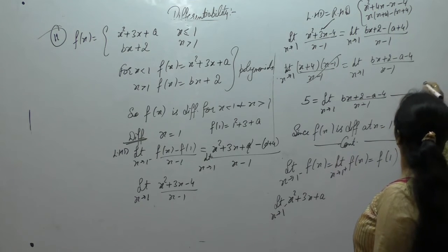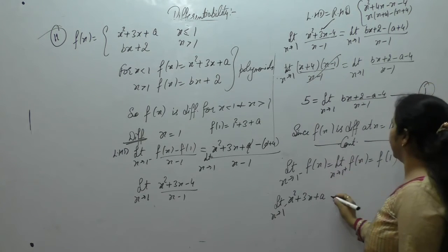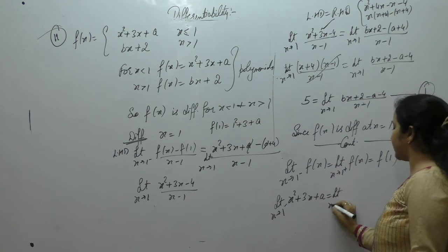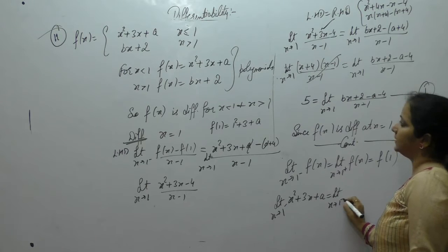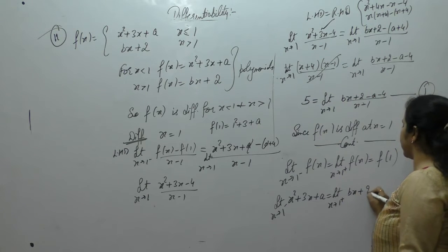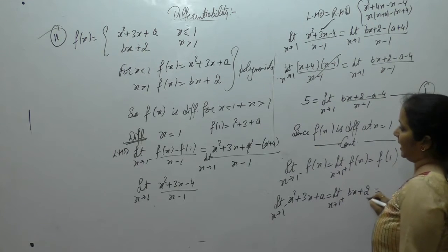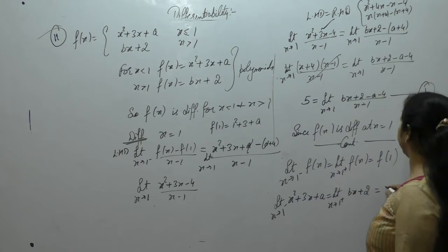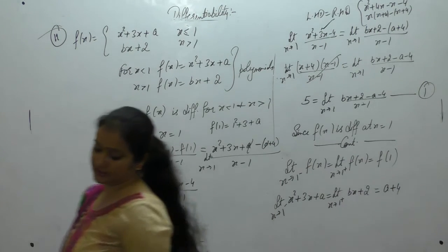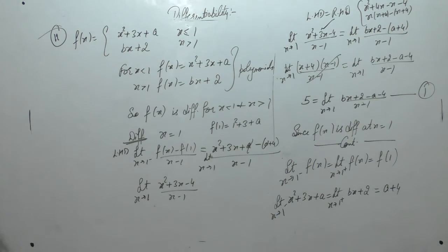Let this be equation 1. Limit x tends to 1 positive, the function has value bx plus 2. And f of 1 came to value, that is a plus 4.